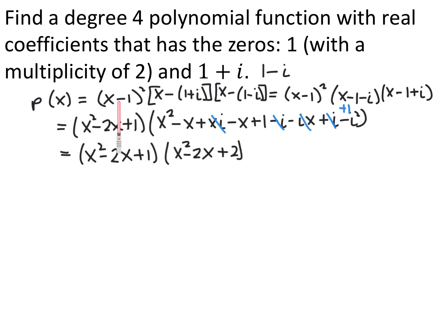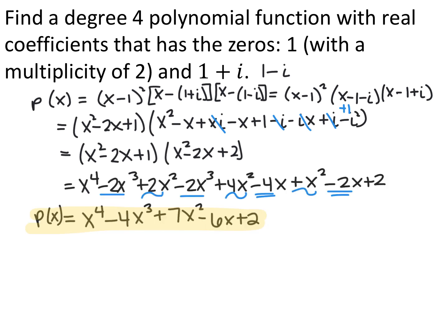FOIL-ing x minus 1 quantity squared gives x squared minus 2x plus 1. FOIL-ing the complex conjugate pair: distributing the negatives gives x squared minus x plus xi minus x plus 1 minus i minus ix plus i minus i squared. The plus xi and minus xi cancel, the negative i and plus i cancel, and minus i squared is minus negative 1, which is plus 1. So I end up with x squared minus 2x plus 2. Then I multiply these two trinomials together to get the degree 4 polynomial: p of x equals x to the 4th minus 4x cubed plus 7x squared minus 6x plus 2, which has all real coefficients.